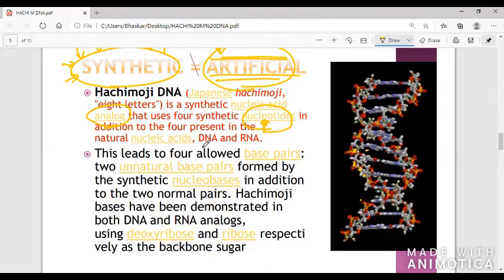It can be created in terms of DNA and RNA, and it leads to four base pairs. Two unnatural bases can be added or more, the synthetic nucleotides in addition to those two normal pairs. Hachimoji bases have been demonstrated in both DNA and RNA analogs.